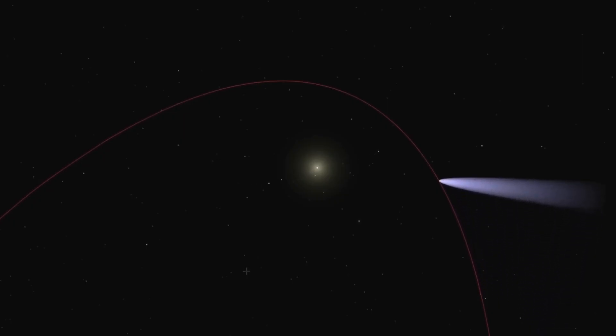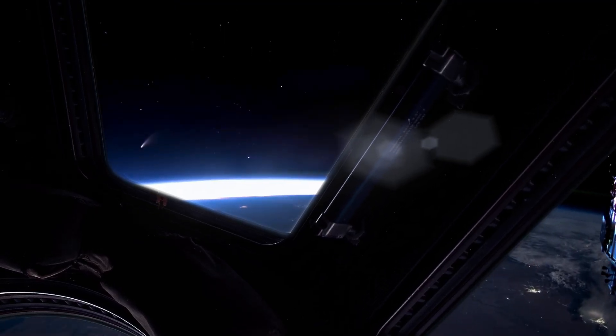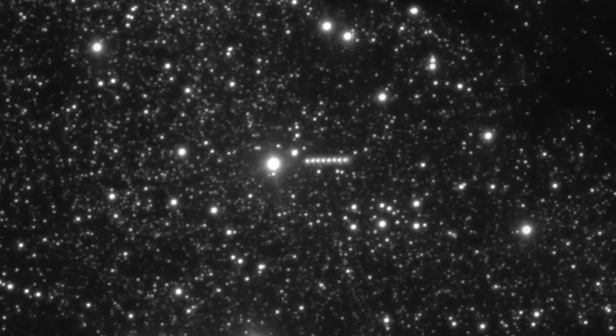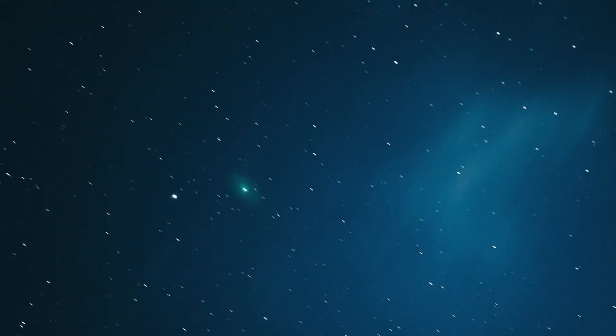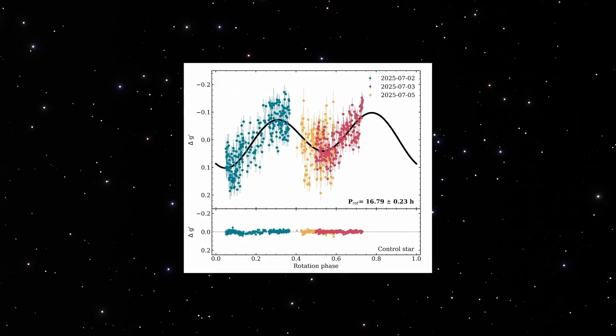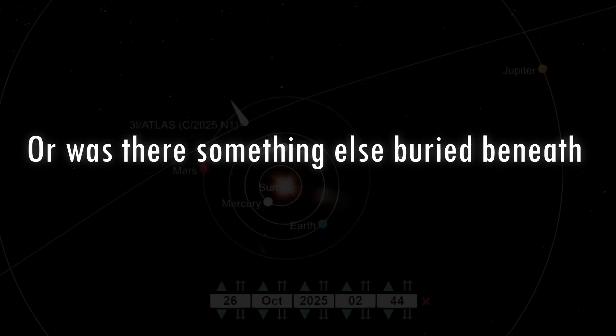Nothing dramatic, but enough to raise eyebrows. Non-gravitational accelerations in comets are common, caused by jets of gas thrusting against the surface like miniature engines. But the scale of this deviation didn't match the expected outgassing. It was too strong, too sudden. Was this simply extreme sublimation, or was there something else buried beneath the surface of this alien visitor?